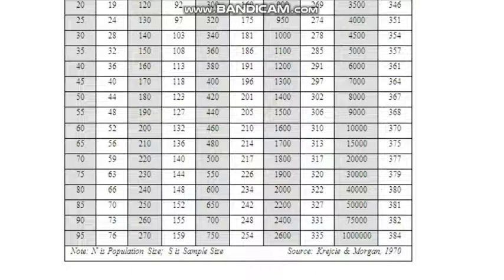Using this table, you can determine the sample size required for your study. If your population size is not listed in the table, you can search on Google for the Krejcie and Morgan formula — it is a mathematical formula you can use to calculate the exact sample size from your population. At the end, you must reference this source in your study to show how you calculated your sample size, making it referenced and authentic.